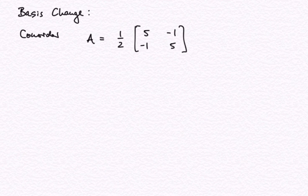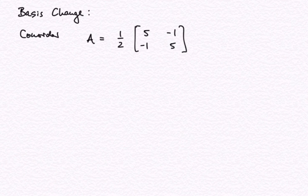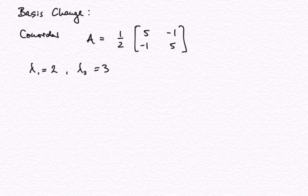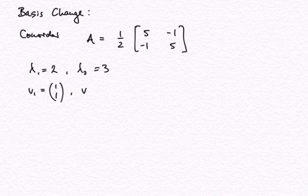Welcome to my series of videos on mathematics for economists, here linear algebra. In this video I would like to talk about basis change. Let's consider this matrix that I wrote down here: 5 minus 1, minus 1, 5 times one half. If you watch my videos on eigenvalues and eigenvectors, you can quickly convince yourself that this matrix has two distinct eigenvalues given by 2 and 3, with corresponding eigenvectors V1 = (1,1) and V2 = (-1,1).